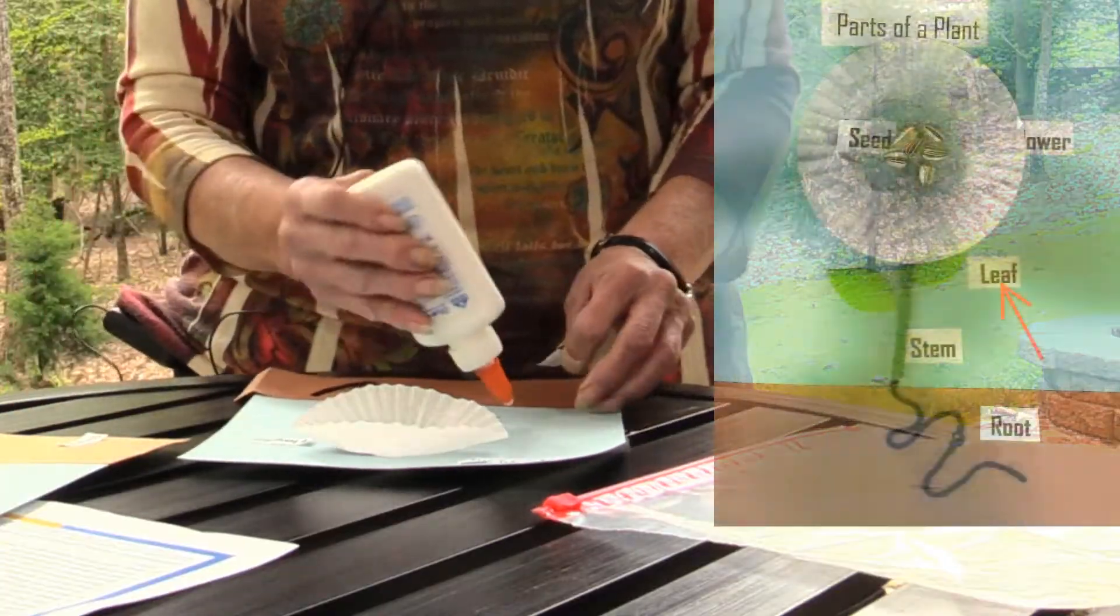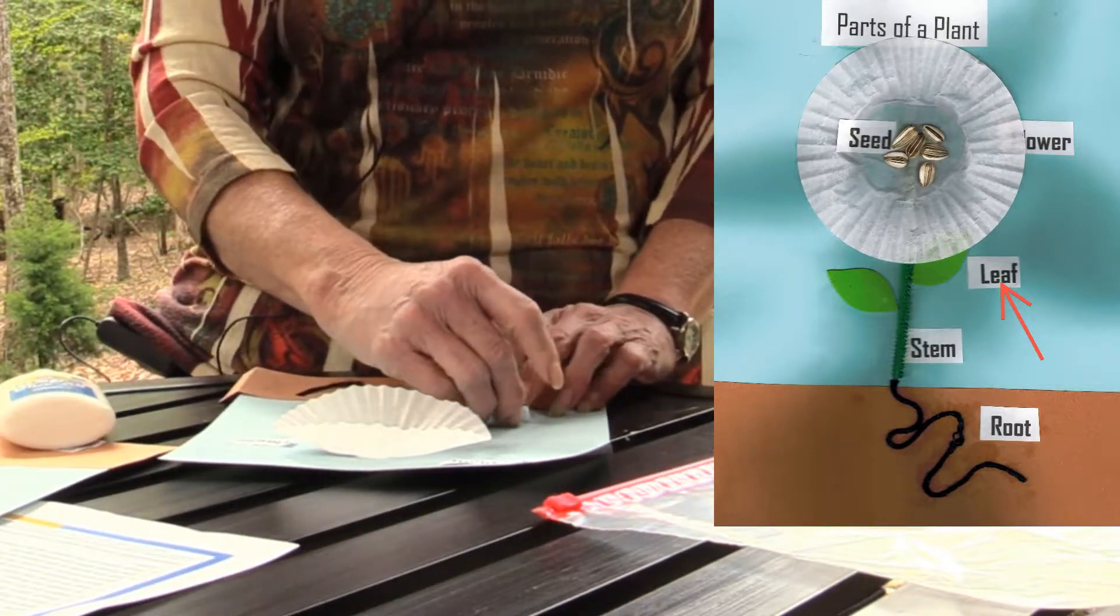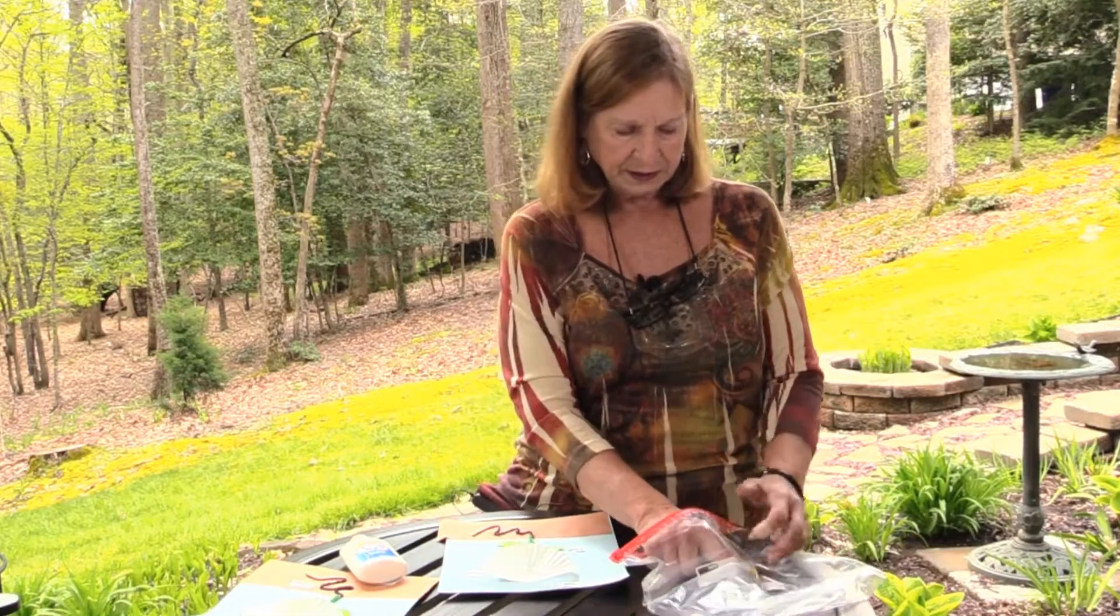But for our seed, I'm going to put that label right inside of the flower. Our leaf. Either side. Just label one of your leaves.